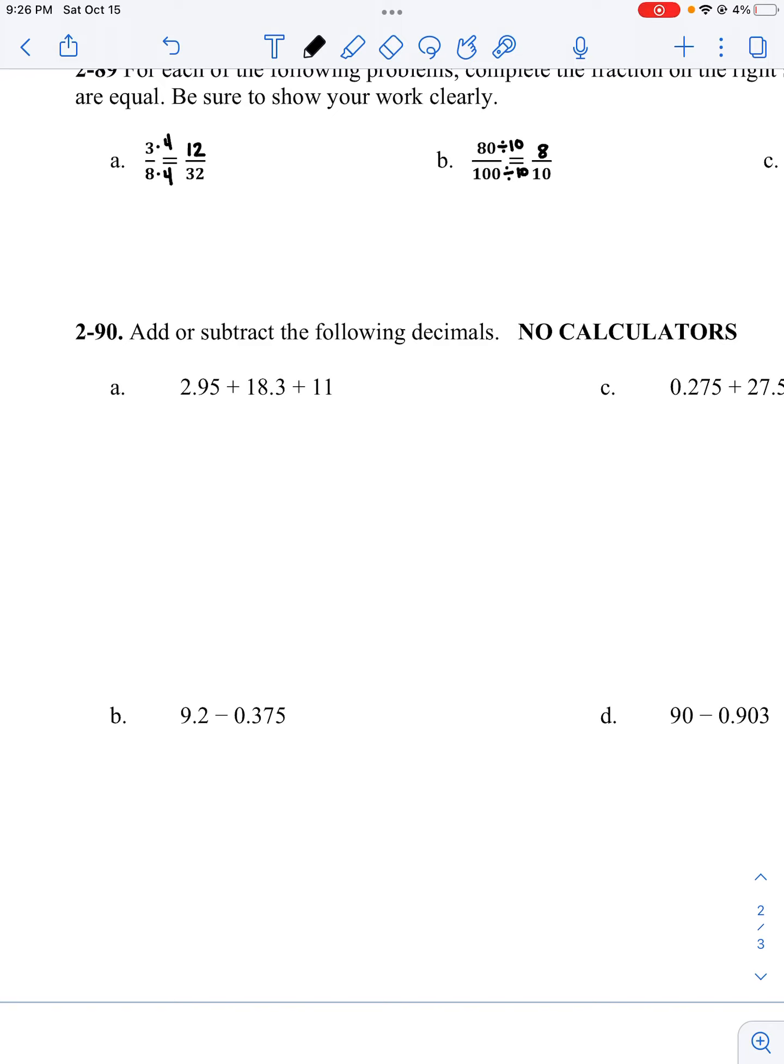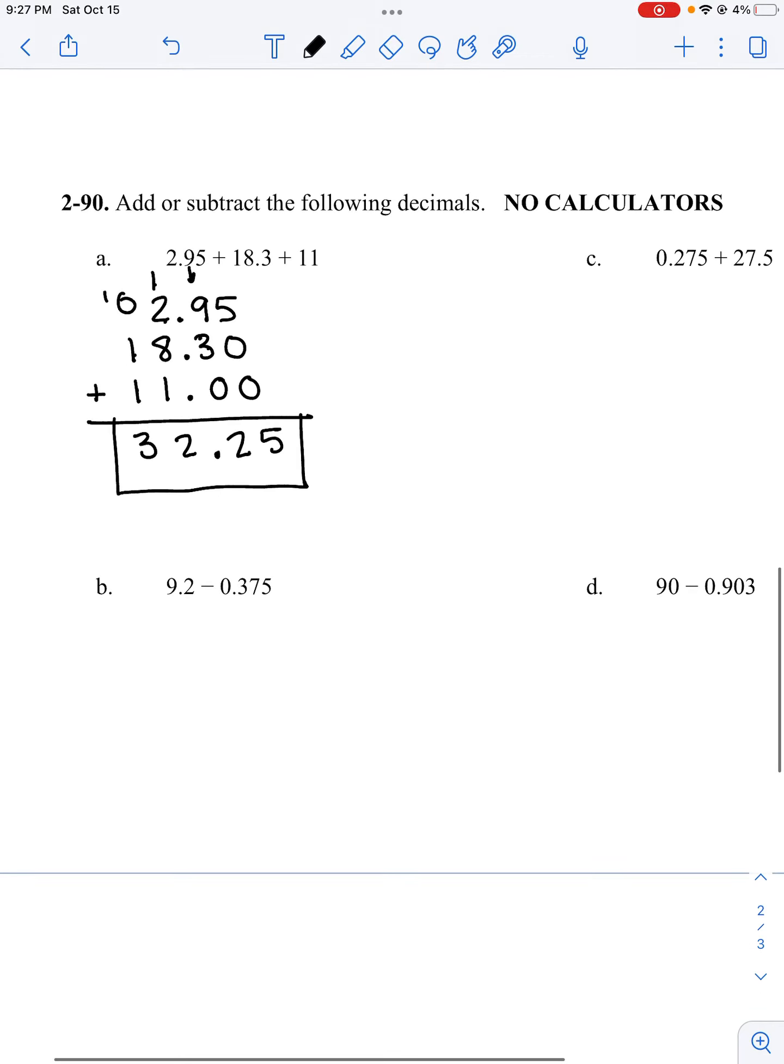Problem 90. We're adding and subtracting. When we're adding and subtracting decimals, we need to make sure that the decimal point is lined up. Remember 11, we can fill in the zeros. We are adding, so 5 plus 0 plus 0 is 5. 9 plus 3 is 12. 8 plus 2 is 10 plus 1 is 11 plus another 1 is 12. And 1 plus 1 plus 1 is 3. The answer is 32 and 25 hundredths.